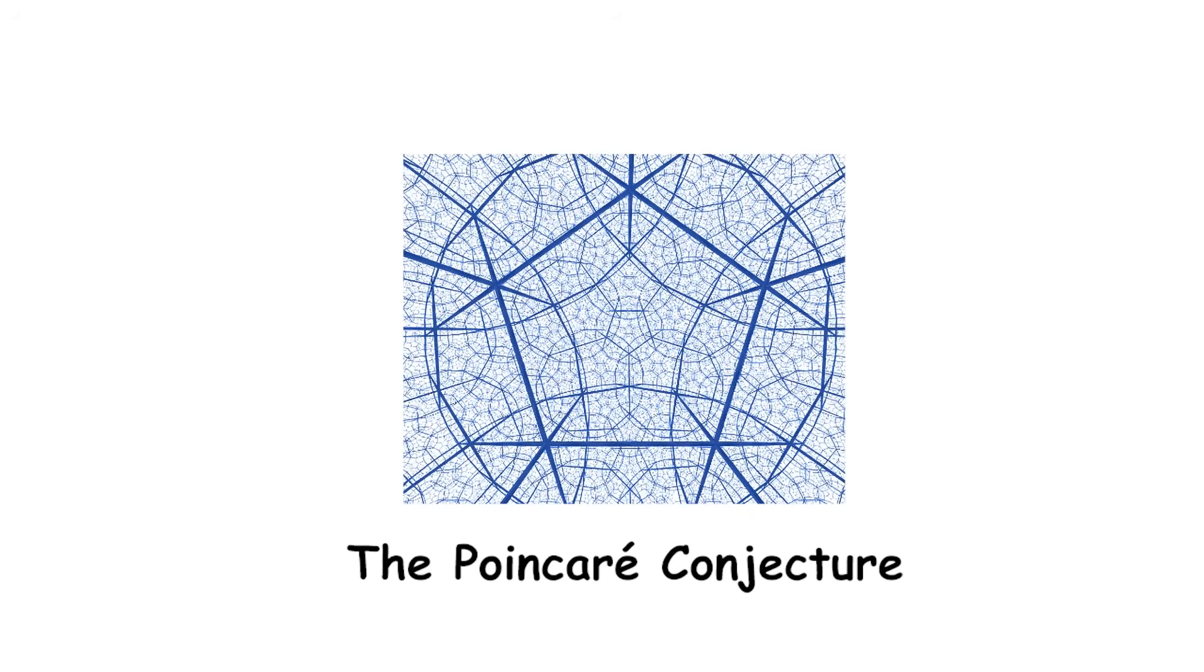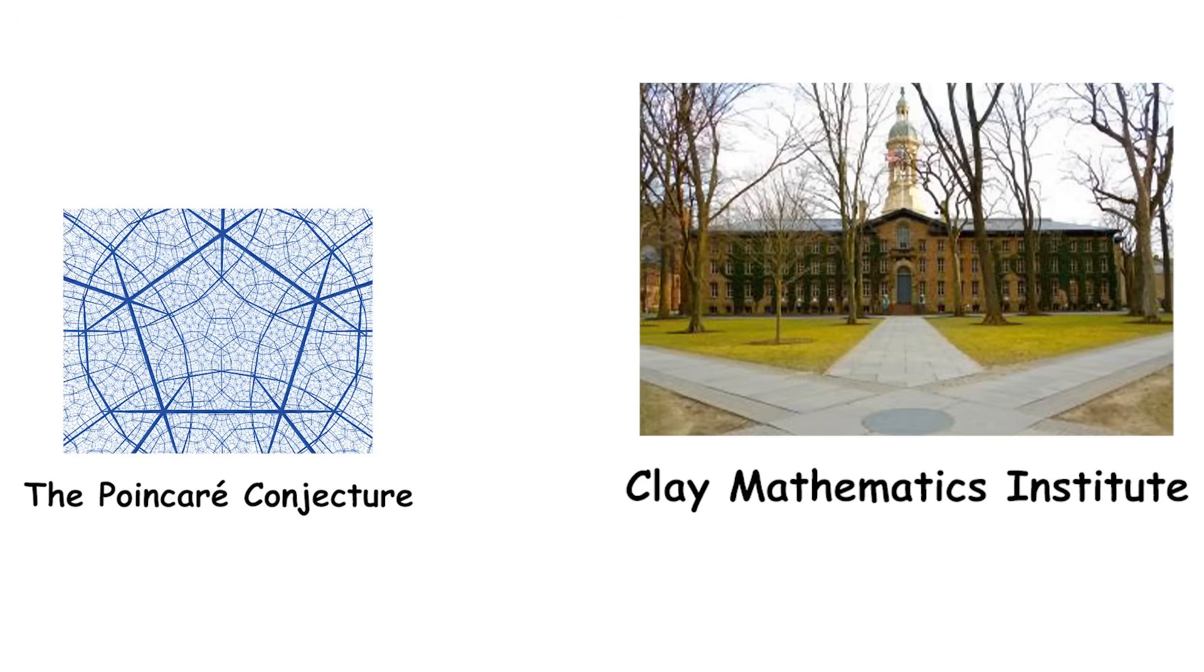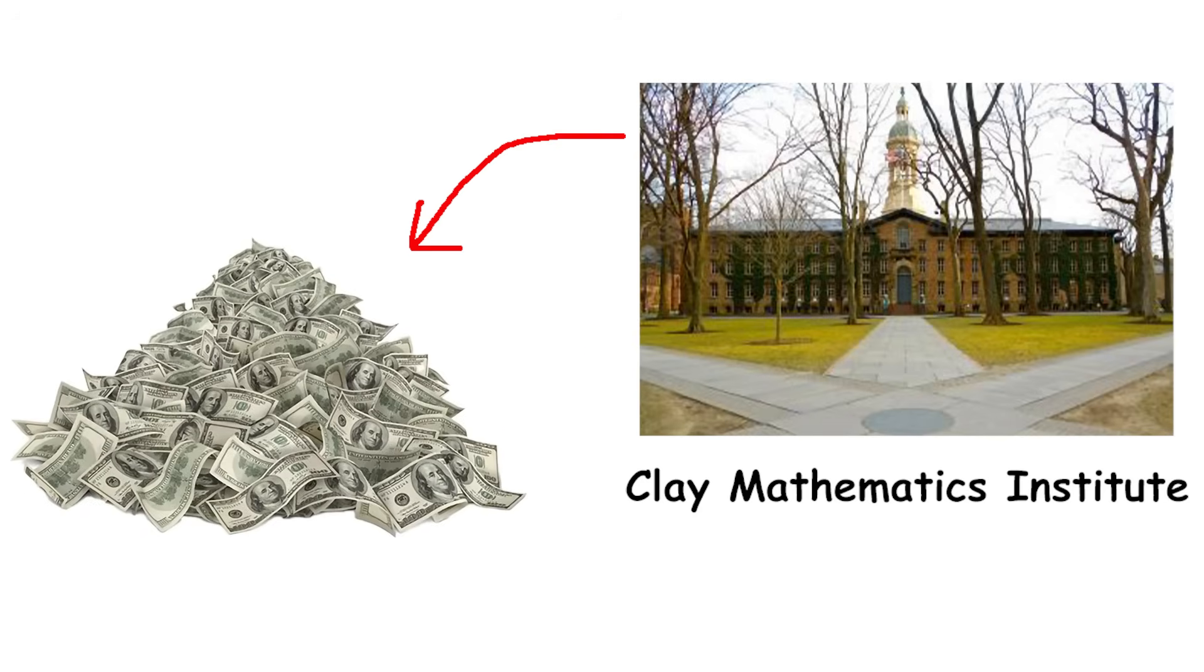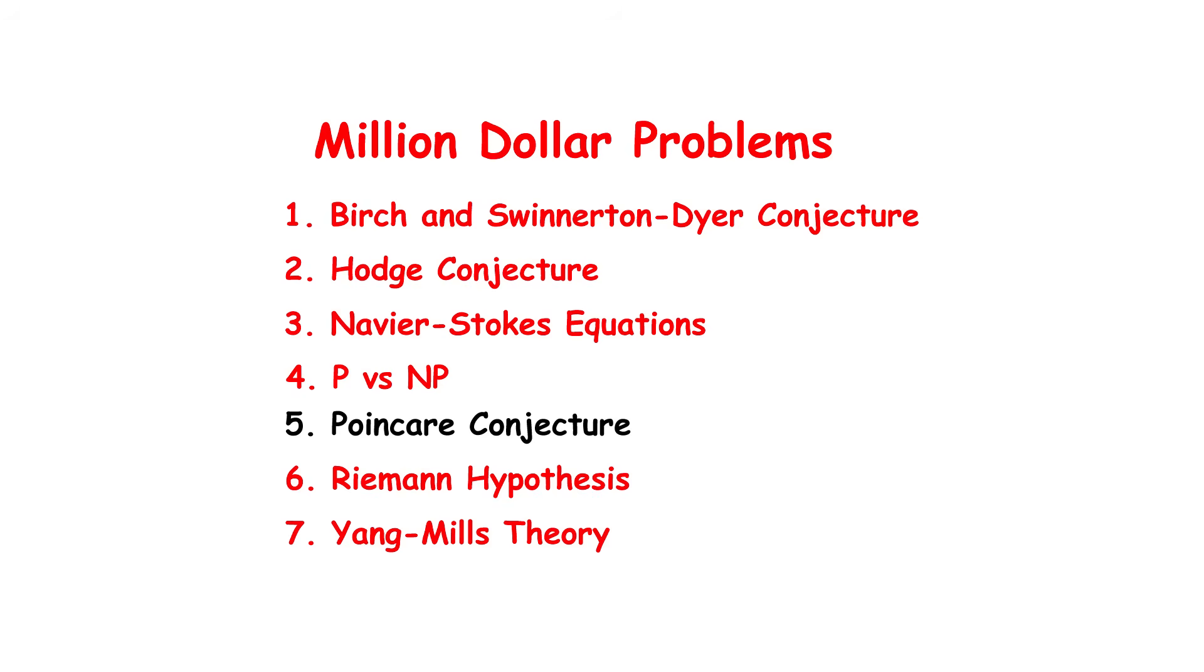The Poincaré Conjecture. In 2000, the Clay Mathematics Institute, a non-profit organization, offered a $1 million prize for solving each of seven important unsolved problems in mathematics. Poincaré Conjecture, posed by Henri Poincaré around 1900, was one of these problems.